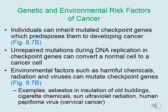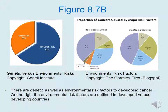There are different ways a normal cell can be converted to a cancerous cell. Individuals can inherit mutated checkpoint genes, which predisposes them to developing cancer. Unrepaired mutations during DNA replication in checkpoint genes can also convert a normal cell to a cancer cell. Environmental factors such as harmful chemicals, radiation, and viruses can also mutate checkpoint genes — examples include asbestos in old buildings, chemicals in cigarettes, ultraviolet radiation from the sun, and the human papilloma virus, which is associated with cervical cancer in women.